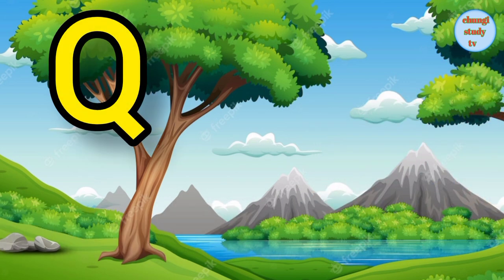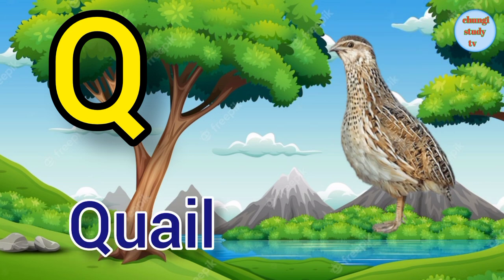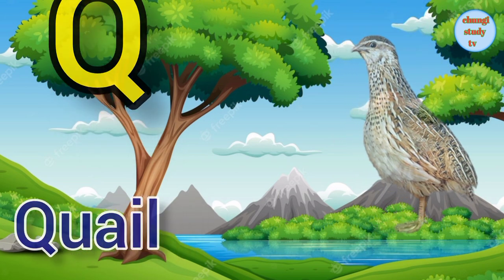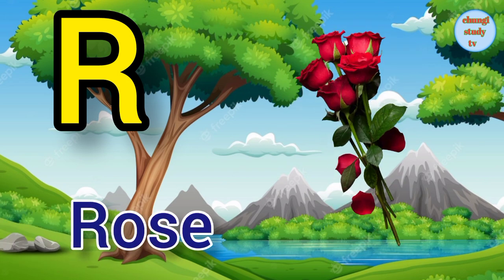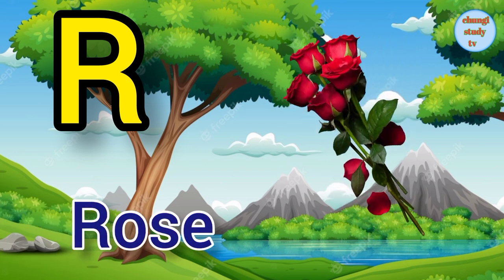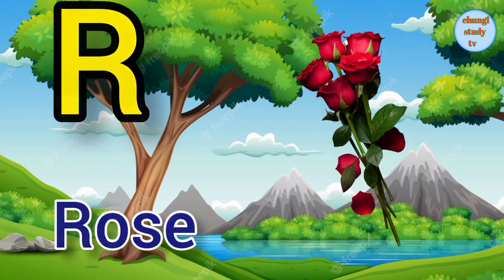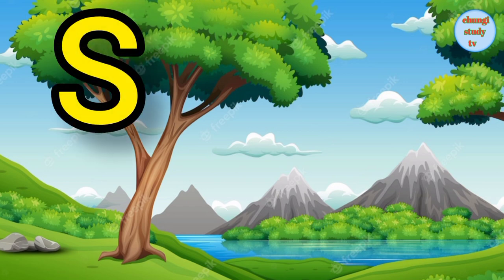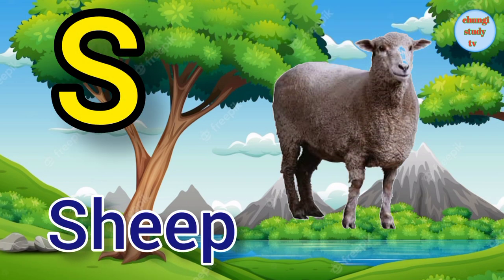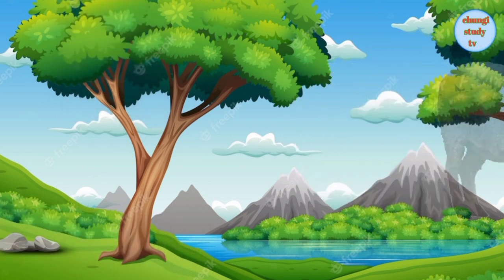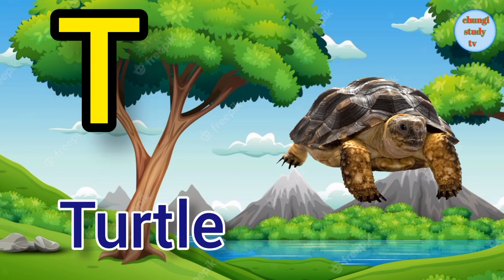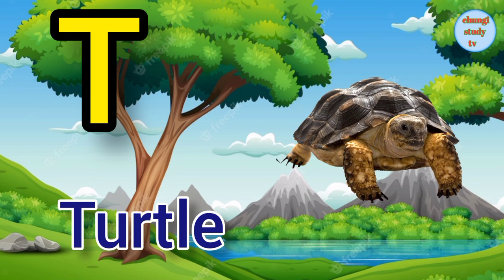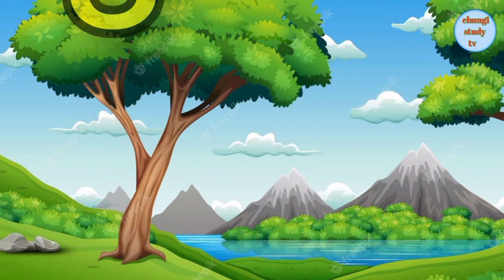Q. Q for quail, quail means butter. R. R for rose, rose means gula. S. S for sheep, sheep means bed. T. T for turtle, turtle means kachua.